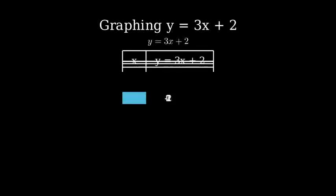Now let's calculate each y value using our equation, y equals 3x plus 2. For x equals negative 2: 3 times negative 2 plus 2 equals negative 6 plus 2 equals negative 4. For x equals negative 1: 3 times negative 1 plus 2 equals negative 3 plus 2 equals negative 1.